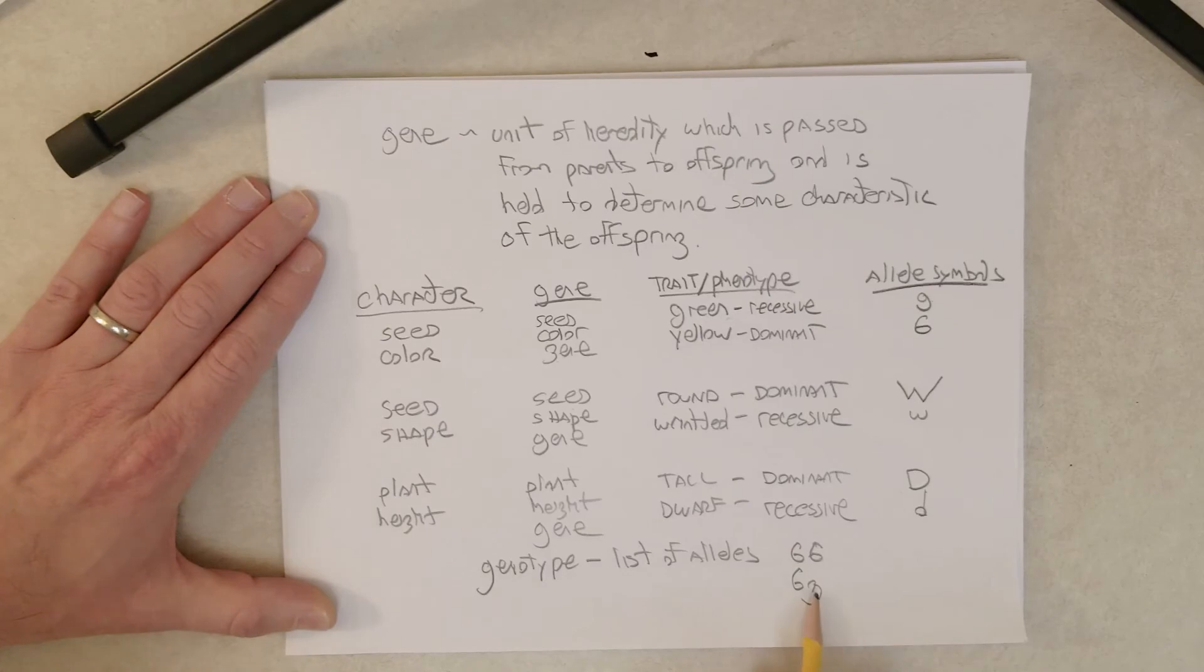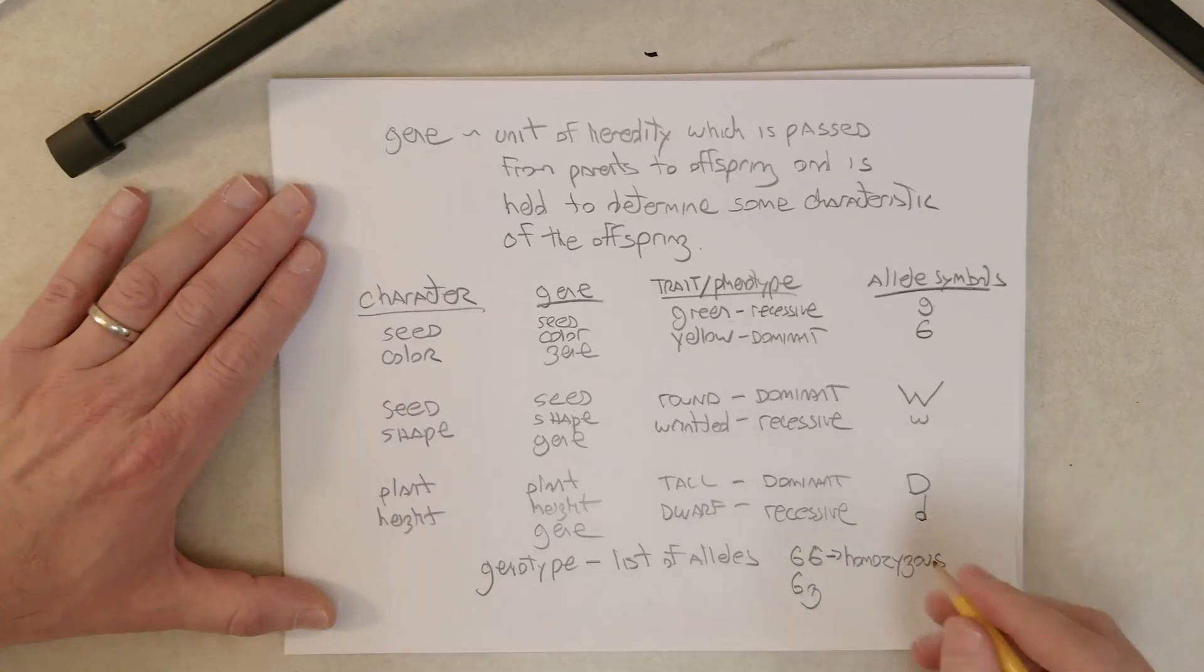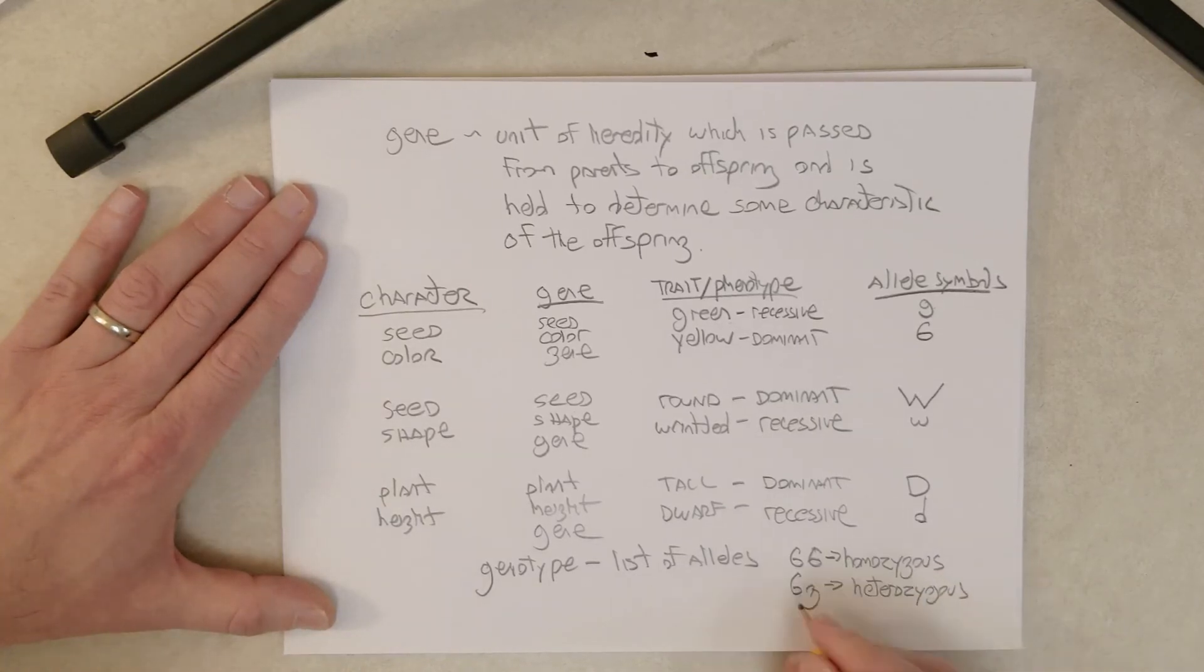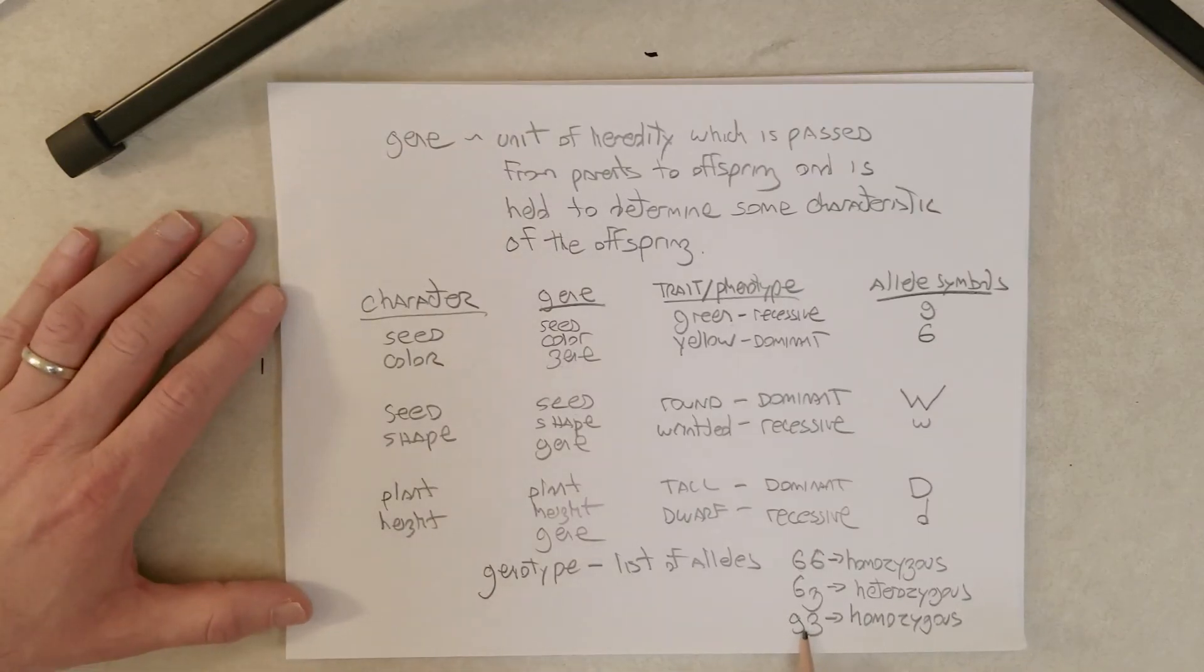Big G, little g. Okay, this other pea plant here has a big G allele and a little g allele. If we see this, this is a homozygous genotype. And we can say homozygous dominant because both alleles are dominant. This is heterozygous. And this is homozygous recessive because it has two alleles that are the same and they're both recessive alleles.